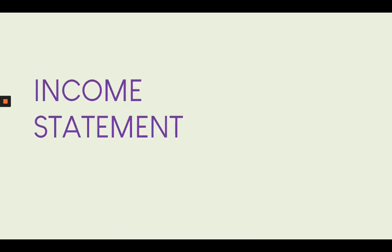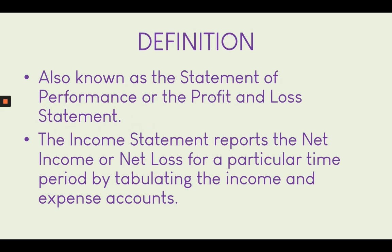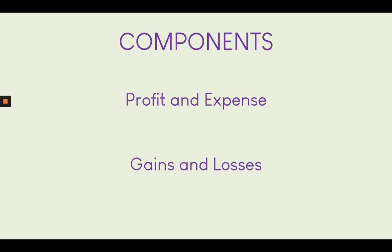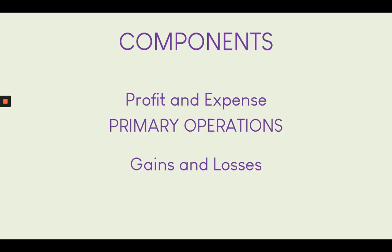The first we'll discuss is the income statement, also known as the profit and loss statement. It summarizes all of the income accounts and expense accounts and contrasts them with one another so that we can get a net profit or a net loss. The components of the income statement include profit and expense, and gains and losses. We acquire profit and expense from primary operations, while gains and losses come from non-primary operations.